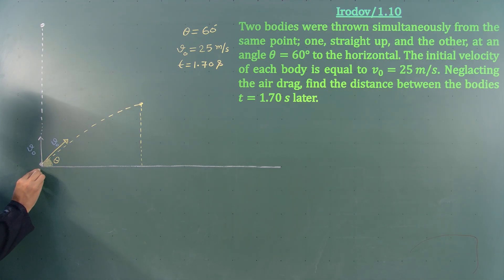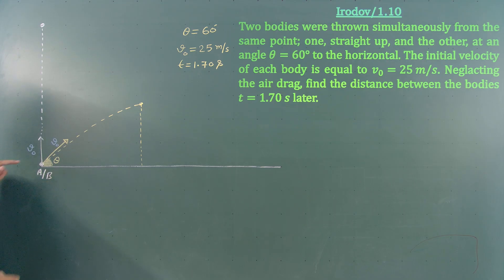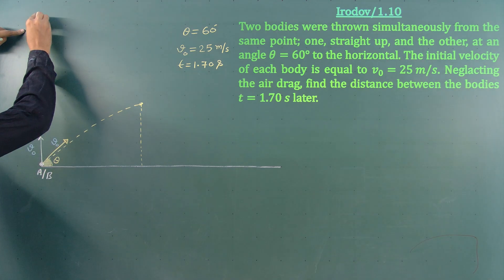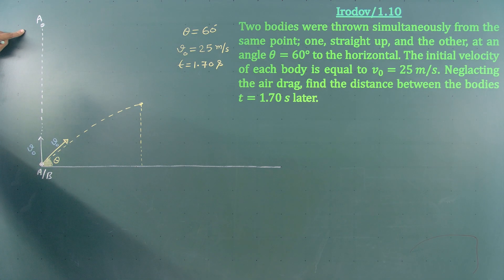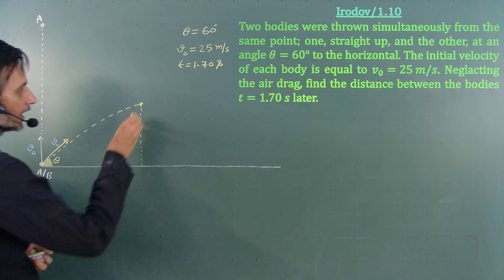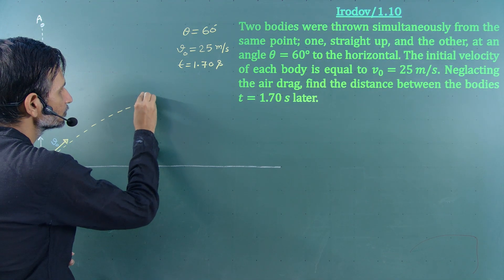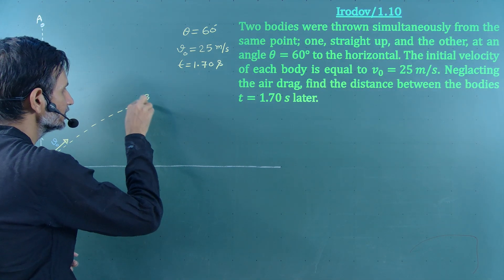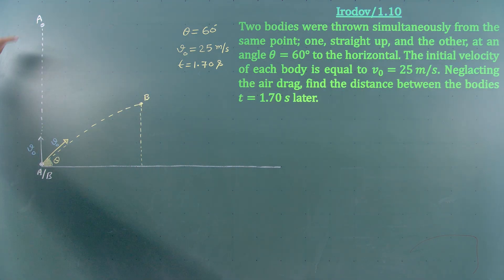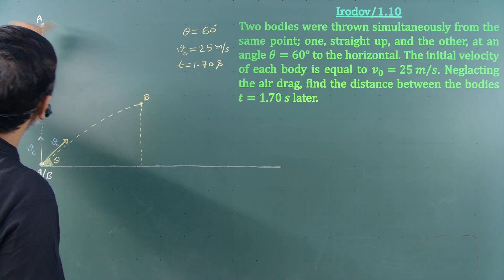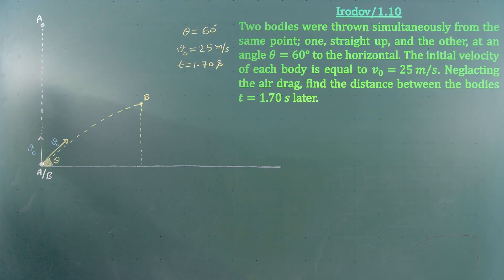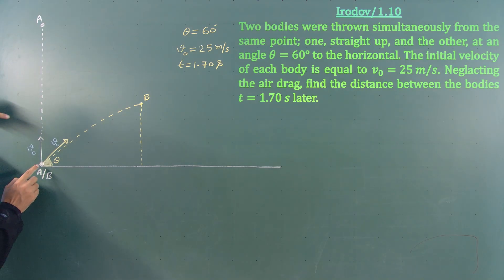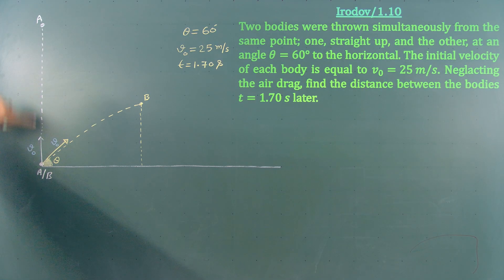Particle A and particle B both start from the same point. Particle A is thrown straight up, so after time t its position is directly above the starting point. Particle B follows a projectile path and reaches some point in 2D space. We have to calculate the distance between A and B at time t.